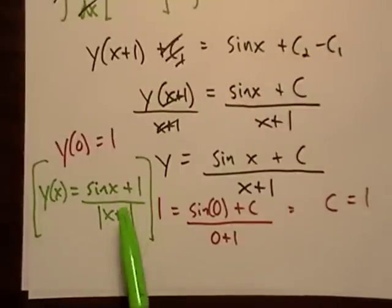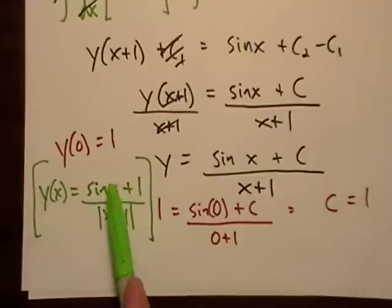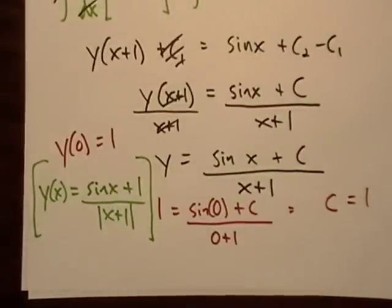Without the absolute value bars, there's a possibility that y of x could be negative. And I guess possibly it still could be negative. Maybe it could have been like sine of x could have been like three pi over two or something. So that wouldn't work because that would make it worth zero. But you know, hey, think about it. So just to be proper, keep the math teachers happy. Rock on and thanks for watching.